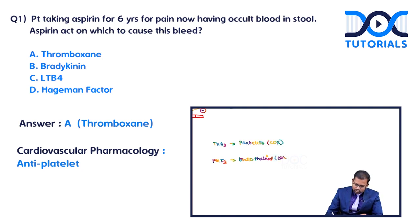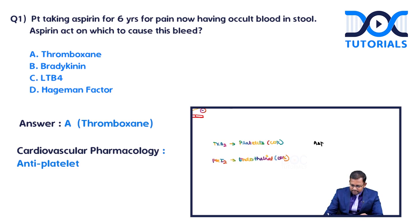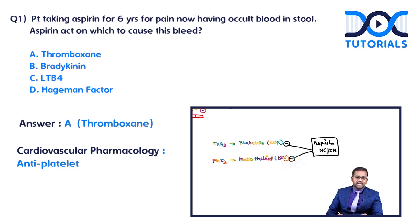When you give aspirin, it causes inhibition of cyclooxygenase. Remember, aspirin is a non-competitive and irreversible inhibitor of the cyclooxygenase enzyme — both the cyclooxygenase enzyme in platelets and the cyclooxygenase enzyme in endothelial cells.